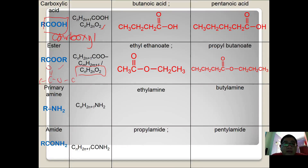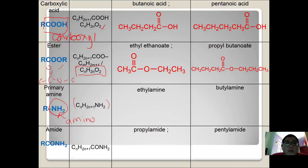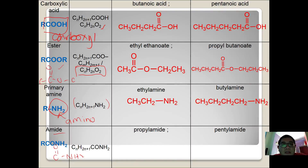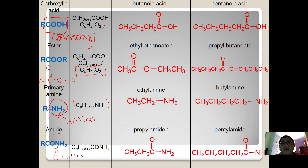Another functional group is amine. Amine has the functional group NH₂, called an amino group. All primary amines have the general formula CₙH₂ₙ₊₁NH₂. There is also amide, which is a derivation of carboxylic acid. Amide has the functional group CONH₂. Its general formula is CₙH₂ₙ₊₁CONH₂. Examples include propanamide and pentanamide.